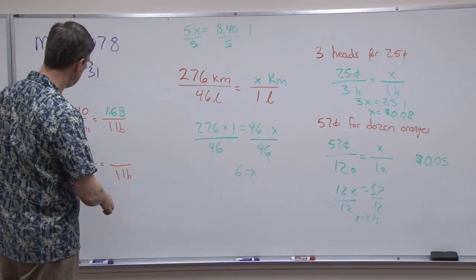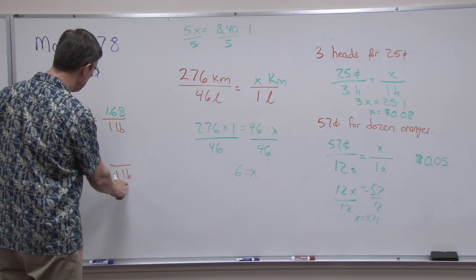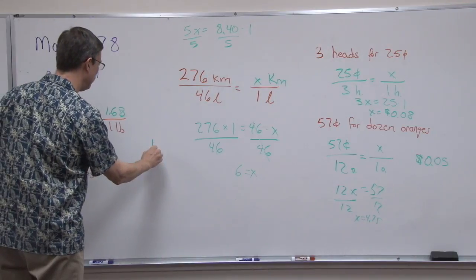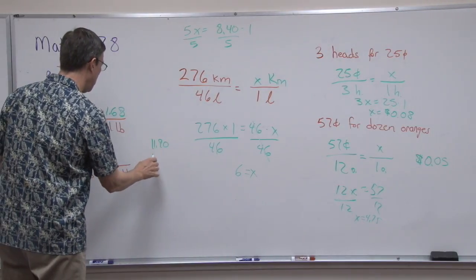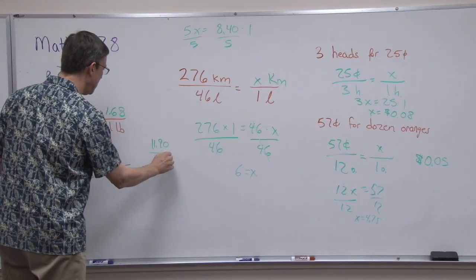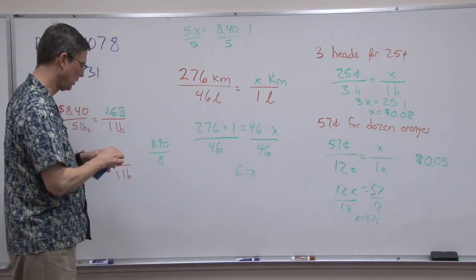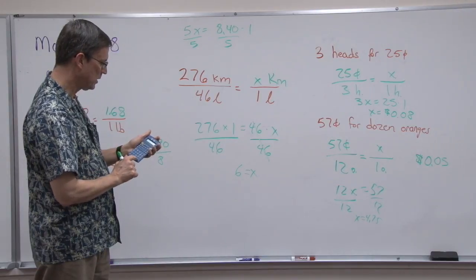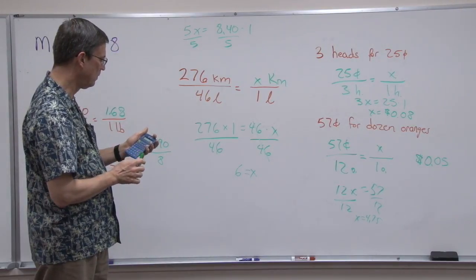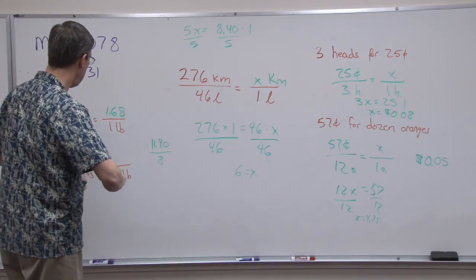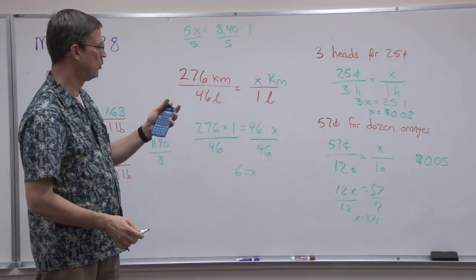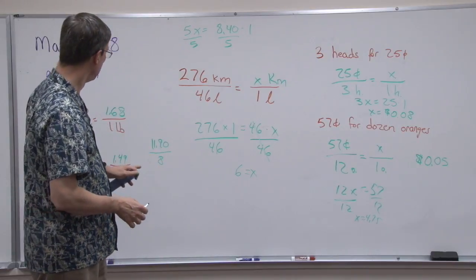You see how we did that. Now this one - I'm going to take a shortcut here. I'm just going to cross multiply 11.9 times 1, and then divide that by 8. So 11.9 divided by 8 equals 1.49. I rounded that off - it's actually 1.4875, we'll round it off to 1.49.